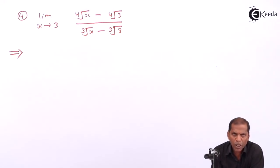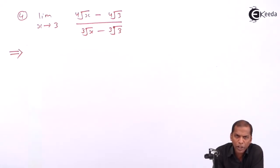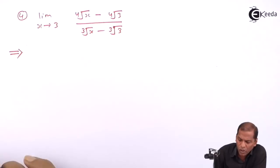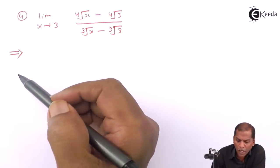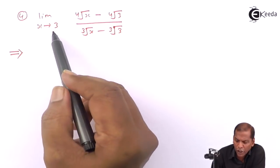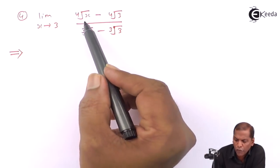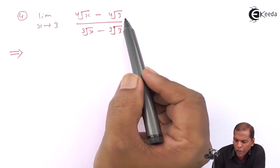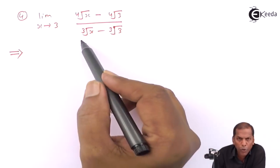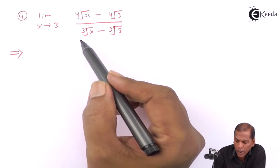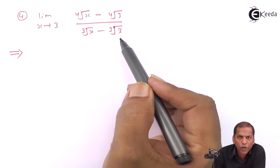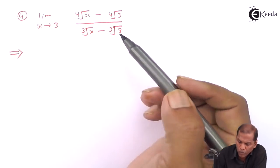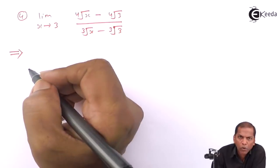Hello friends, now we see problem number 4, which is also based on the formula. The question is: limit x tends to 3 of the 4th root of x minus 4th root of 3, upon cube root of x minus cube root of 3. Now let's see the solution.